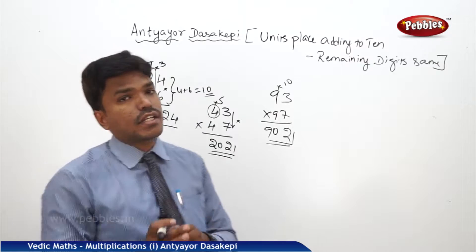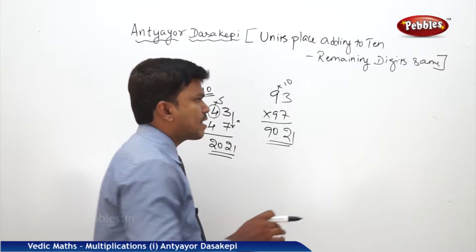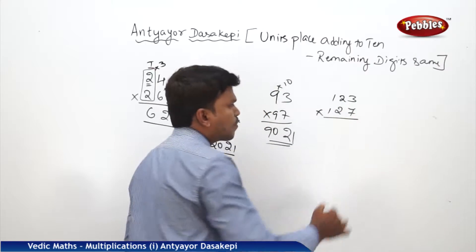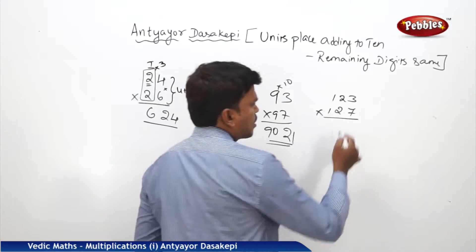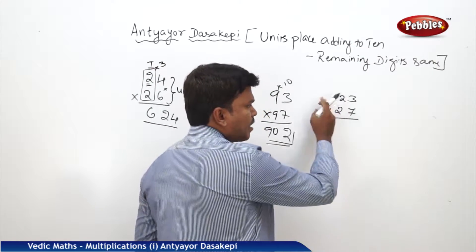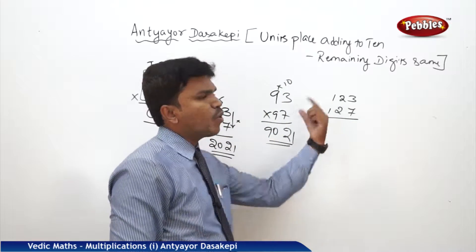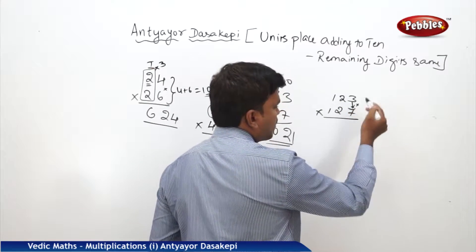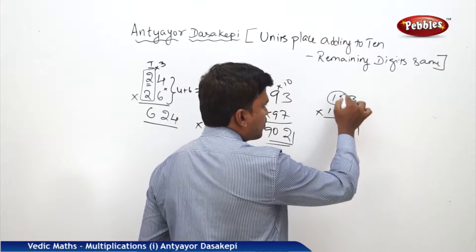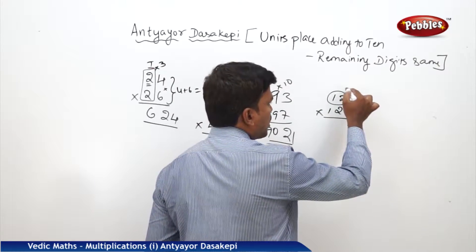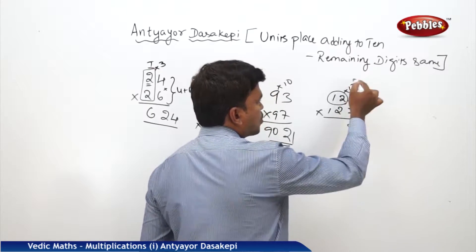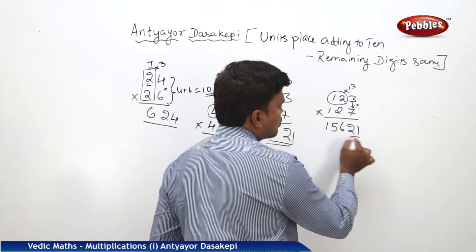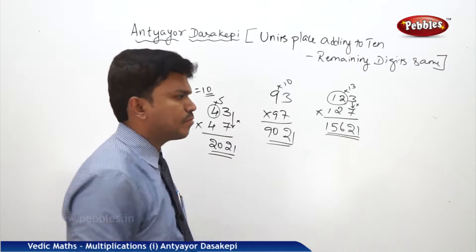You can even extend this technique to the hundreds place. For example, I want to multiply 123 into 127. Units place 3 and 7 add to 10, and the remaining digits 12 are the same in both numbers. First, multiply the units digits: 3 into 7 is 21. Then multiply the remaining number 12 with its next number 13: 12 into 13 is 156. So your answer is 15621.